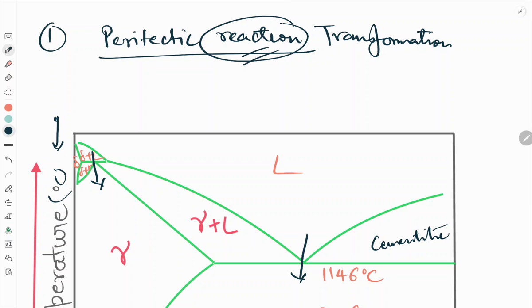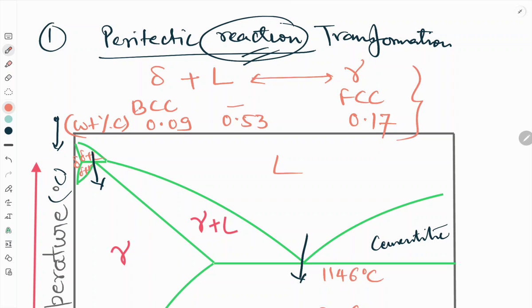Actually it is not a reaction, it is a peritectic transformation, but generally we call it reactions. So what is the reaction? The reaction is delta plus liquid gives gamma. What is the structure of delta? That is BCC. Liquid has no structure and gamma has FCC structure. And what is the composition? So delta has composition of 0.09 weight percent of carbon, liquid is 0.53, and gamma is 0.17. So this is about the first reaction from top to bottom in iron-carbon phase diagram.